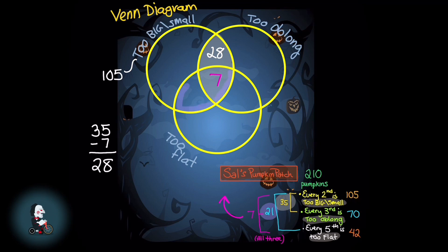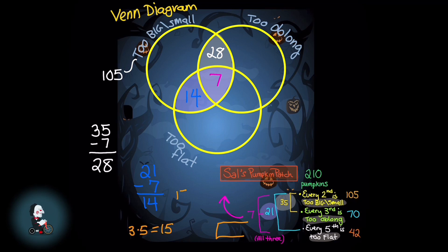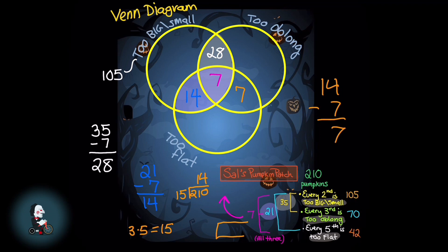Next we consider the intersection between too big or too small and too flat. That intersection is 21 pumpkins total, but taking away the 7 that have all three leaves 14 that are just too big or small and flat. For the last intersection — every third and every fifth pumpkin — dividing 210 by 15 gives us 14 total. Subtracting the 7 in the middle, we get 7 that are just oblong and flat only, and not too big or small.